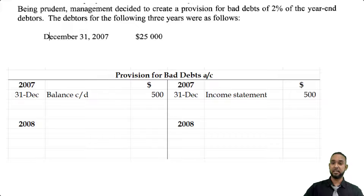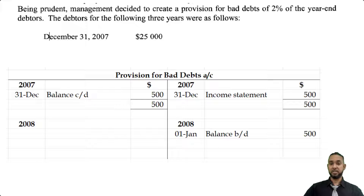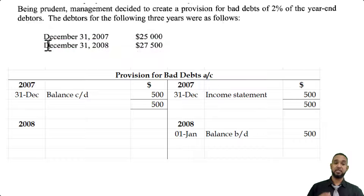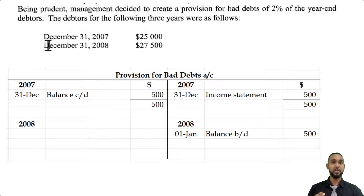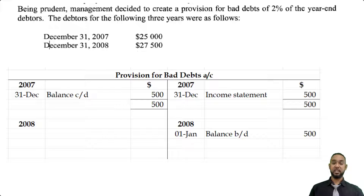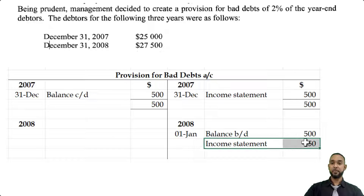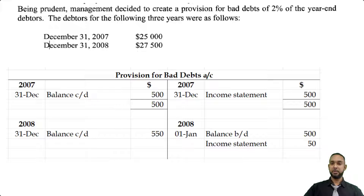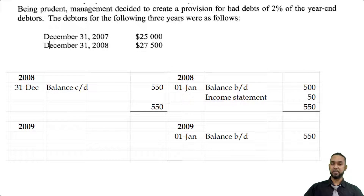That's the only entry. We're going to balance it off at the end of the year, total it up, and bring the balance down to 2008. Now in 2008 at the end of the year, we have $27,500 worth of debtors. 2% of that is $550. But in the provision account, we already have $500 existing as a provision. So if we need to go to $550, we simply have to increase from $500 to $550 — that's an increase of $50, which goes on the credit side. So now we balance off the account: December 31st, $550 total, and bring the balance down to 2009.